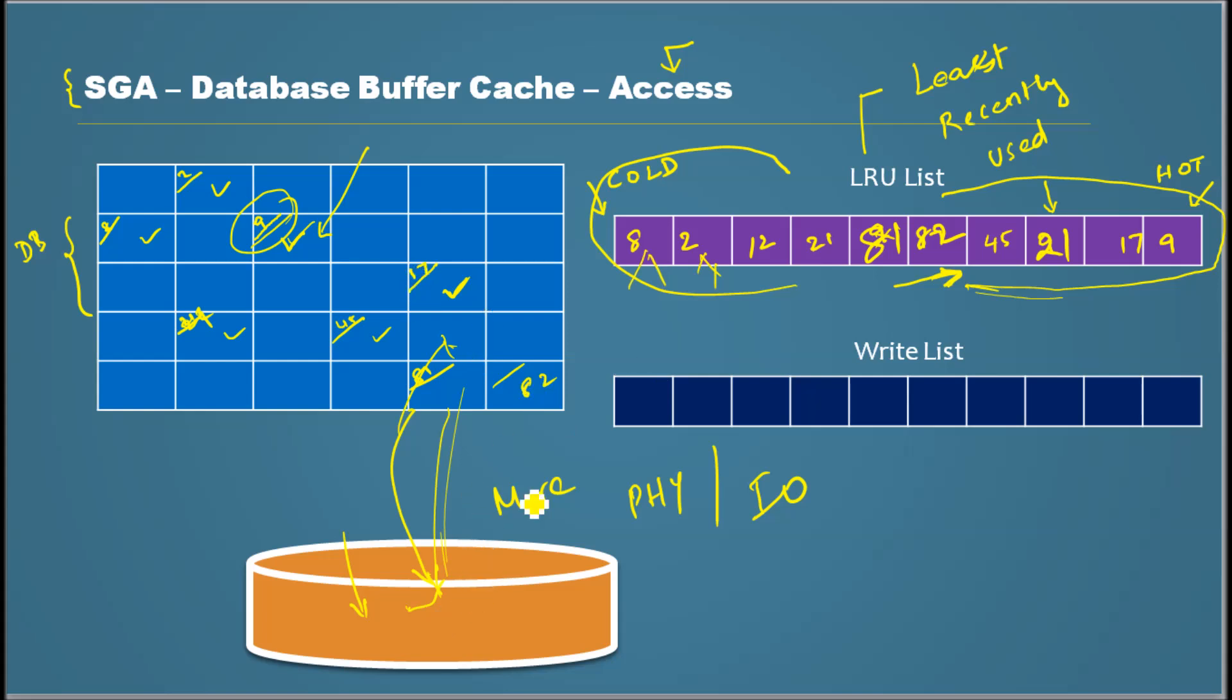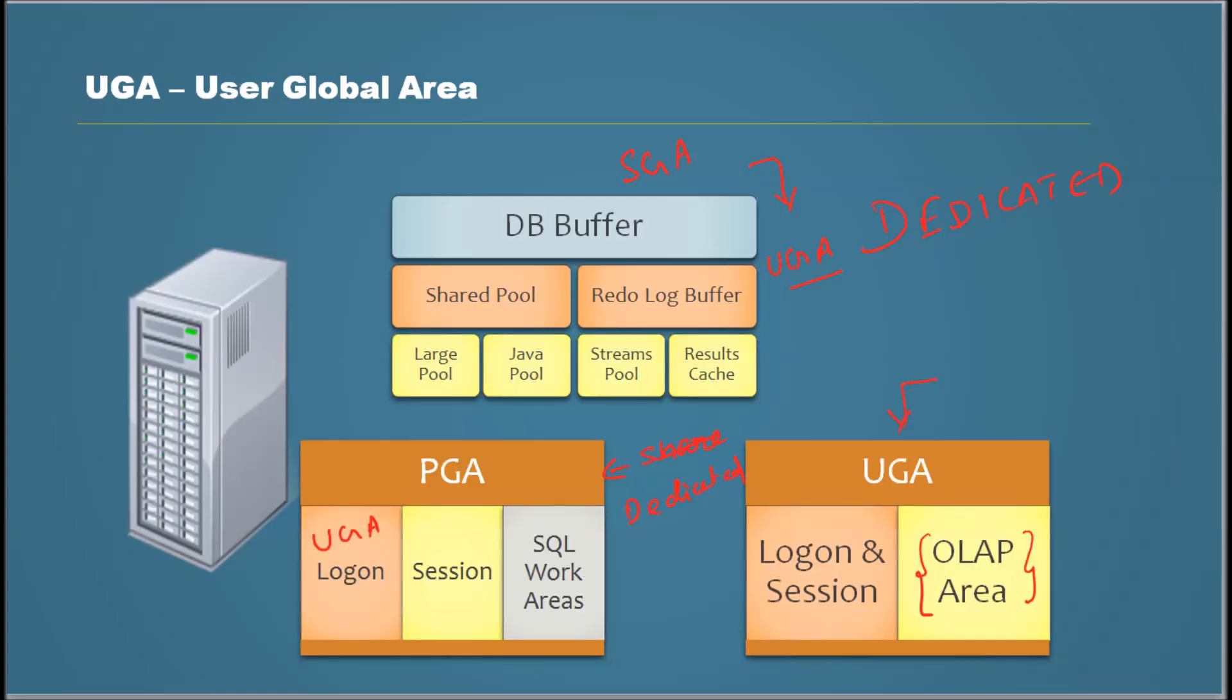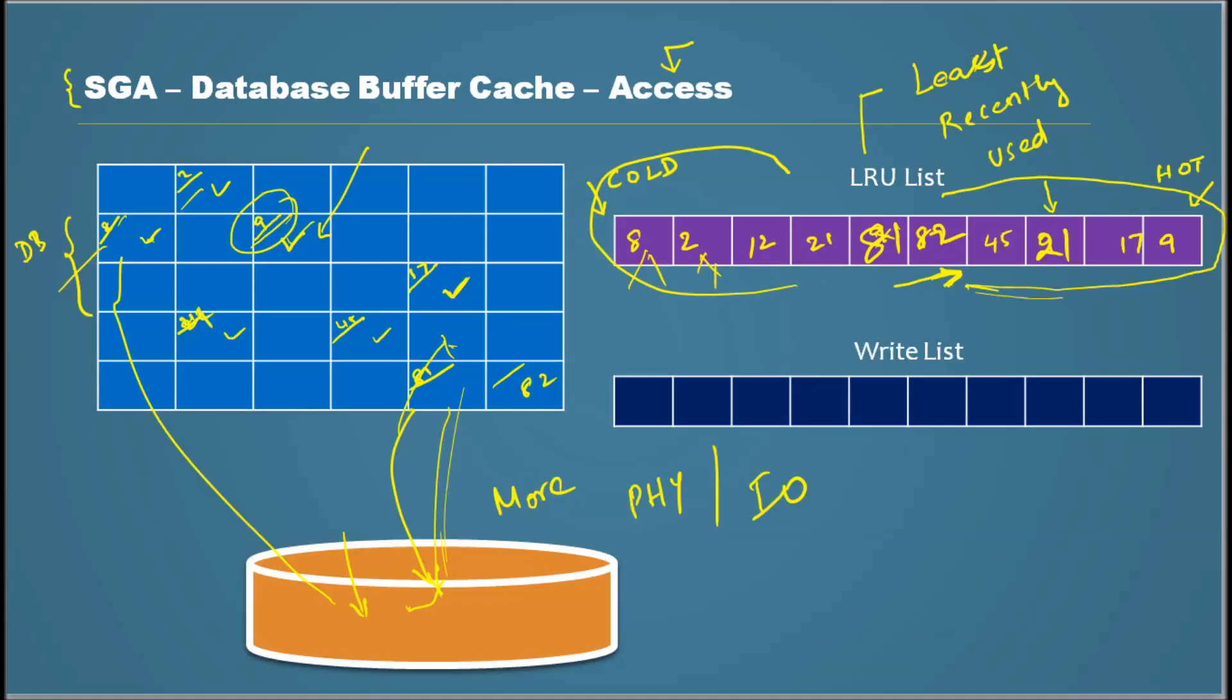Then it's easy for Oracle to age out these blocks when new blocks need to be stored. The LRU list will tell Oracle to find out the status of the data in 8 and 2. I will come to the status of the data in DB buffer later because we've got so much to talk about. But if this data is not needed anymore, they can be simply aged out and the new data can be stored here and there.